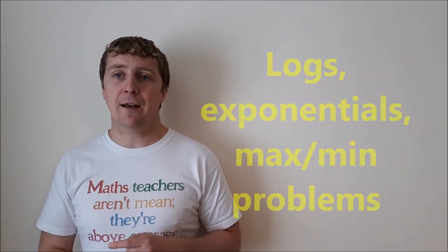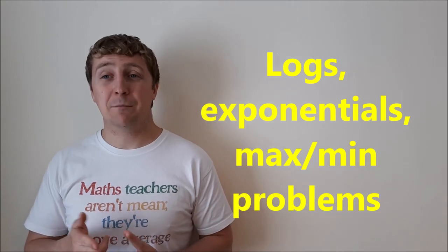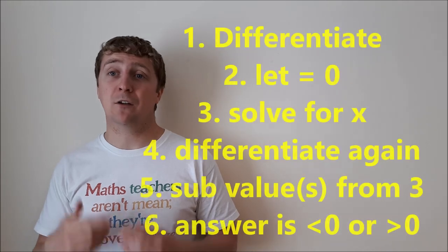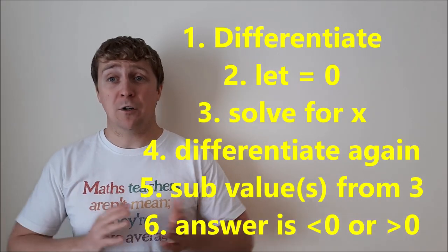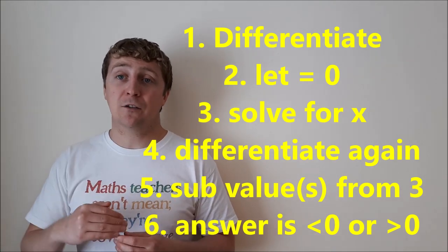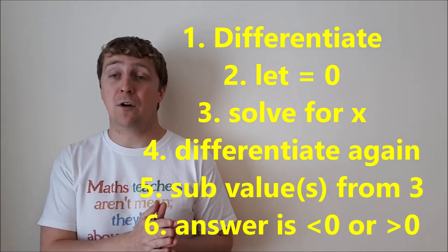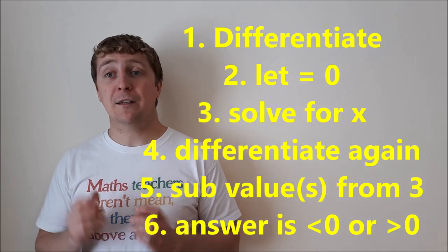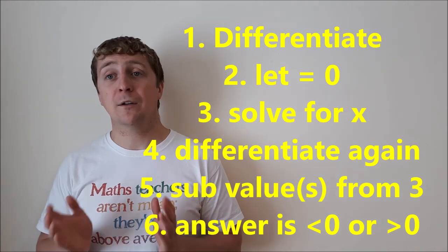Be able to differentiate logs, exponentials, your max min problems. So if you're looking for the local max or local min, you differentiate, you let the derivative equal to zero, you solve for x. You might get one or two values - then differentiate again to get your second derivative and then input your answers from your first derivative. So whatever values you got for x, input them into your second derivative and see what the answer is. If the answer is greater than zero, you have a local min. If it's less than zero, it's a local max. That's kind of the opposite to what you would think. Greater than zero, local min. Less than zero, local max.